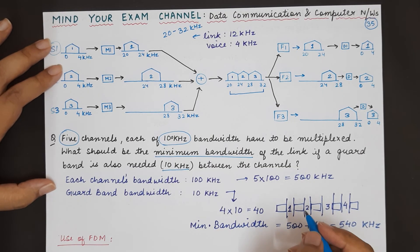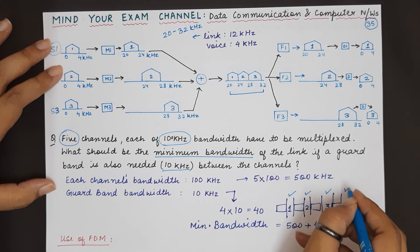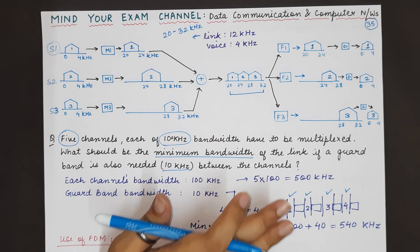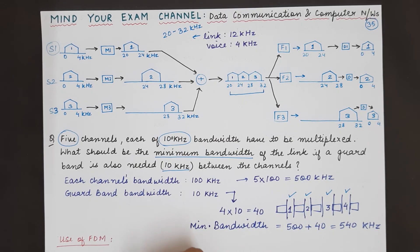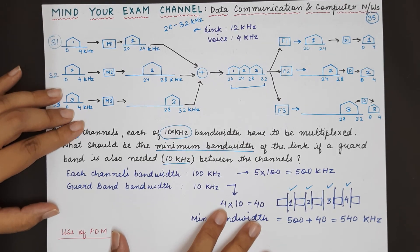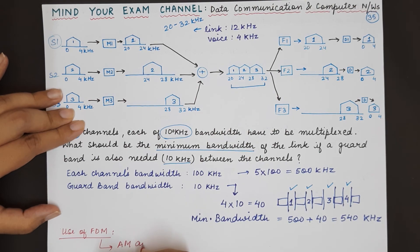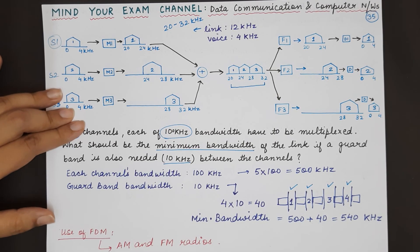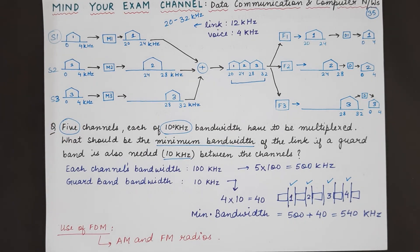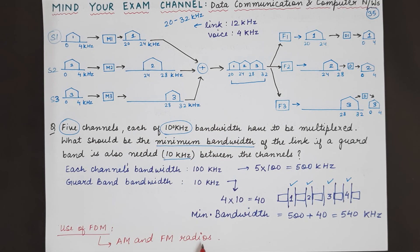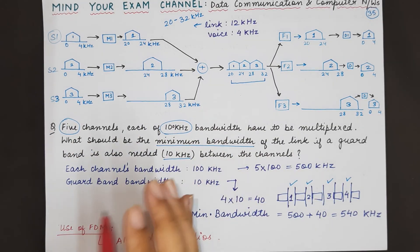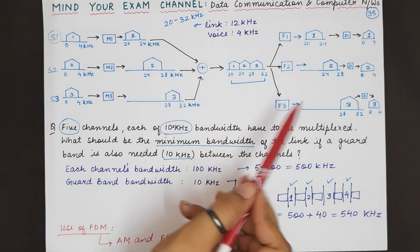Frequency division multiplexing finds its application in FM and AM radios that we use in homes and mobile phones. AM and FM radios use frequency division multiplexing because all the channels are transmitting signals but there is a single link carrying all those signals — a mechanism is required so that all the original signals generated by these radio channels are sent through the link and received correctly at the receiver end such that the link is completely utilized.